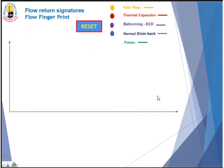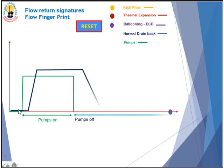Now look at this flow return signature — another name for it is flow fingerprint. On every connection in HPHT wells, this is highly recommended. When you have a normal drain bag: the green line shows pumps on and running, then pumps off. You have a little delay when you start the pump before flow returns at the flow line. While pumps are running, you have constant flow return. When you turn the pumps off, you still have some returns — that's the drain bag — and then flow slowly reduces down to zero. This is normal drain bag.